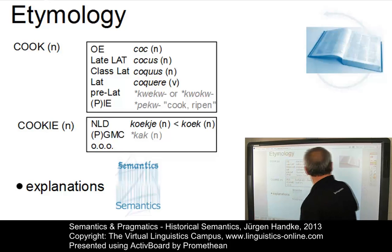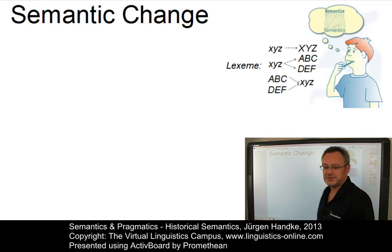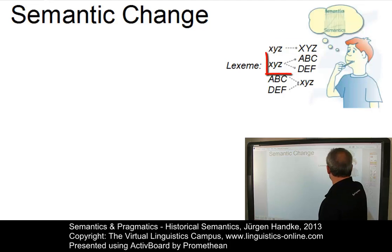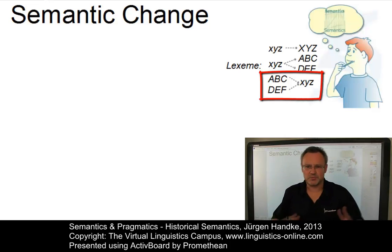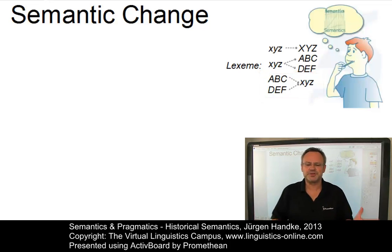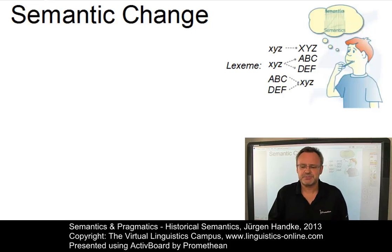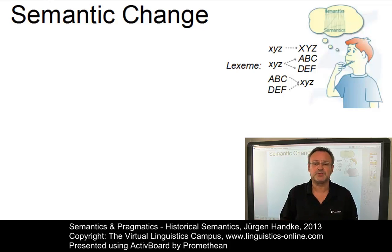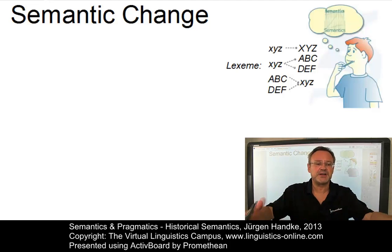Let us look at semantic change first. Semantic change is concerned with change in the meanings of words, especially with the passage of time, understood to be a change in the concepts associated with a word. There are three possibilities: there can be a one-to-one relationship; there can be a split, where the meaning of a lexeme splits into two concepts; or there can be a merger, where the meanings of two or more lexemes merge into one. Traditionally, those studying semantic change have given little consideration to general semantic theory, with most work concerned with change in individual lexical items.